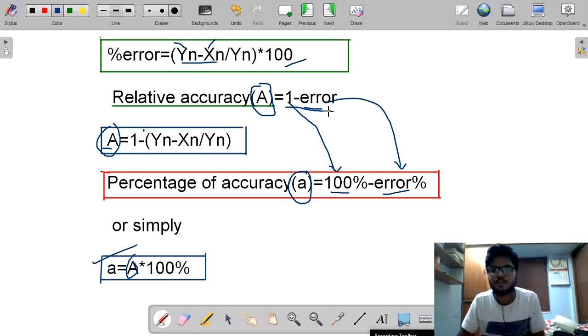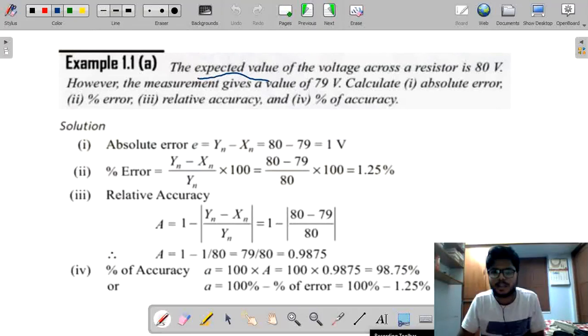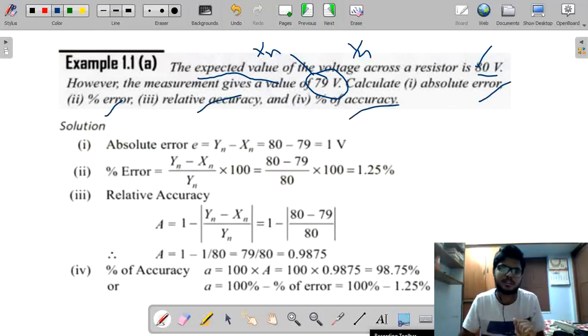Now, we will see one example. So, you will get more clarity. See, the expected value of voltage is 80. Initially, notations are very important. What is expected value? Yn. Given, Yn equal to 80. Now, the measurement gives a value of 79. This is the measurement value. What is measurement value? Notation, Xn. So, Xn equal to 79. Now, just calculate absolute error, percentage error, relative accuracy, percentage of accuracy. Now, calculate one by one. First one, absolute error. What we have defined absolute error? Expected value minus measured value. 80 minus 79 equal to 1 volt.